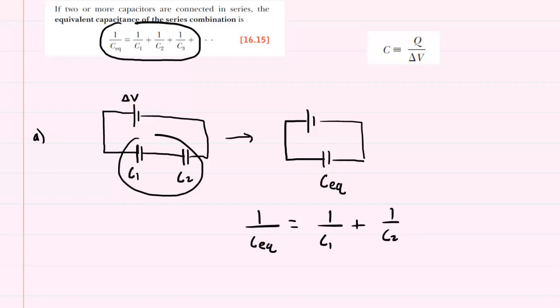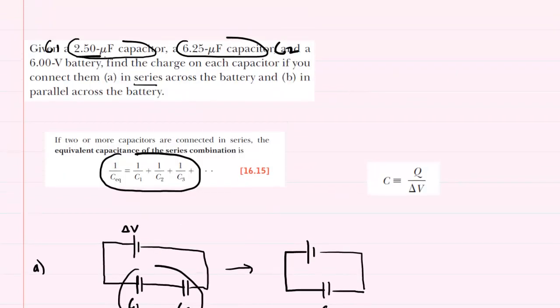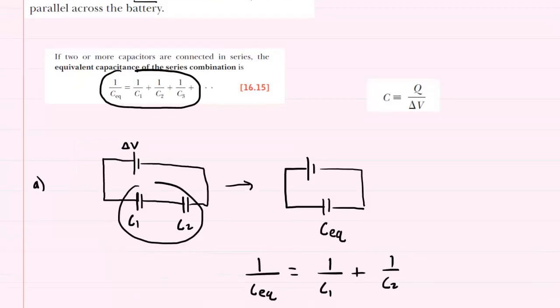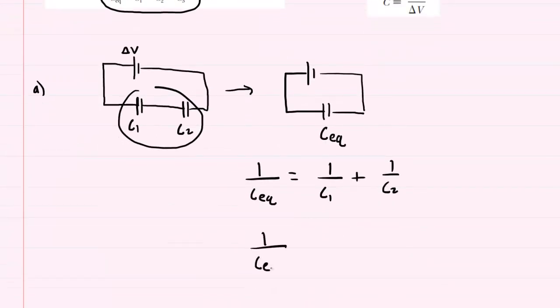Now again, the values of C1 and C2 were given, 2.5 microfarads and 6.25 microfarads. So we'll have 1 over CEQ equals 1 over 2.5 microfarads plus 1 over 6.25 microfarads.